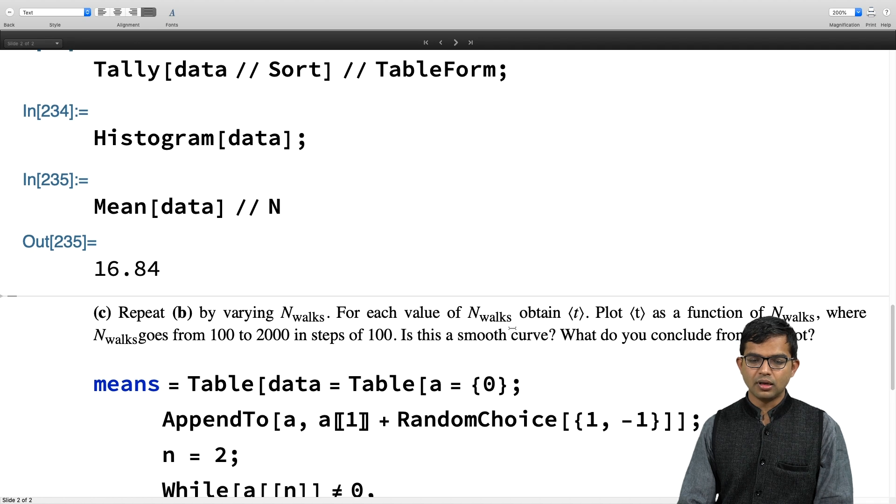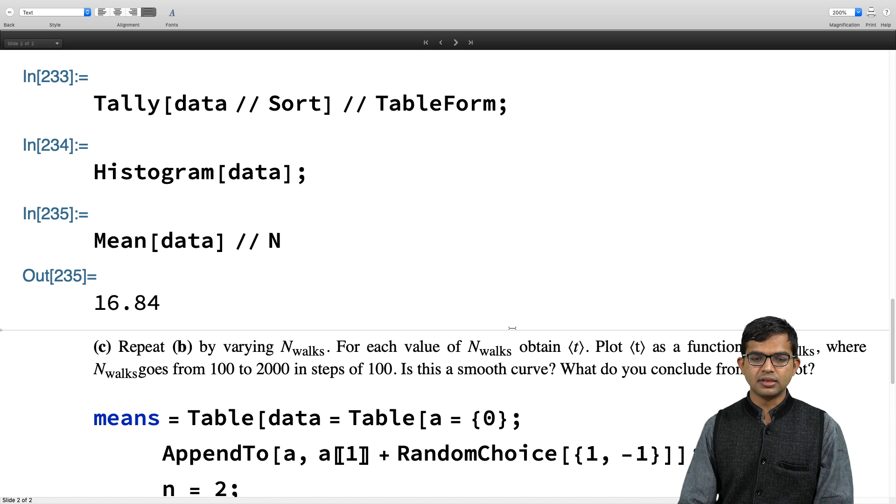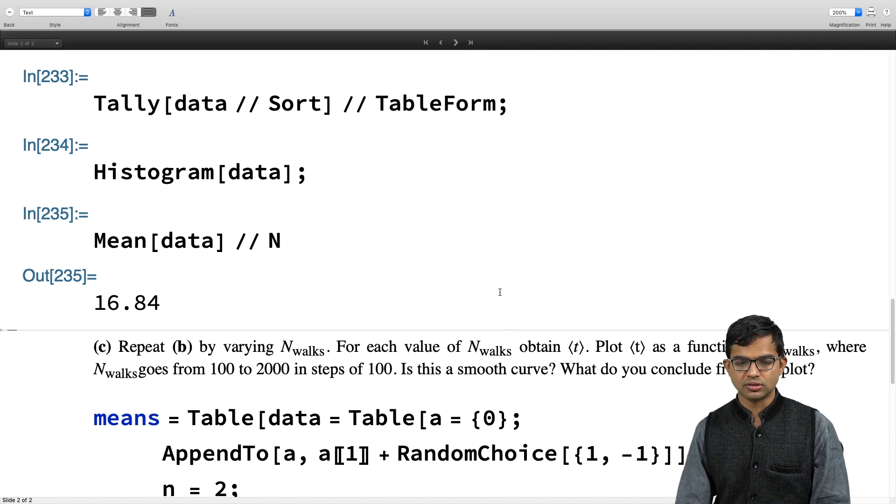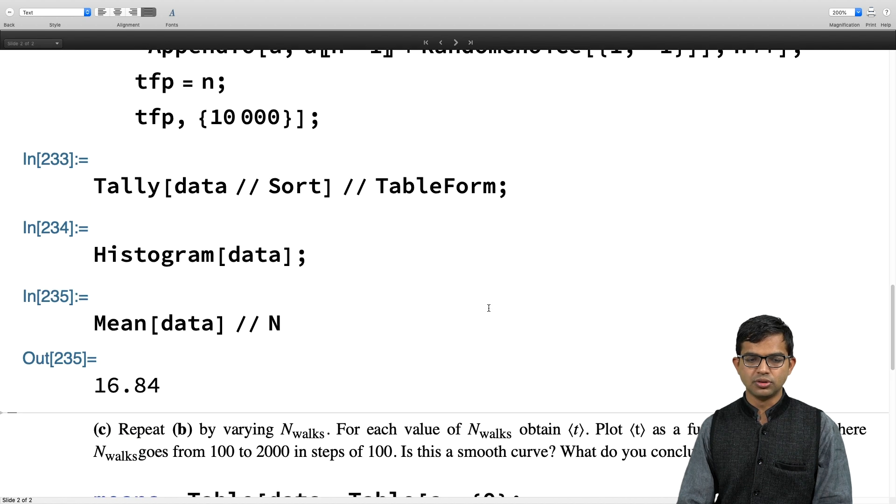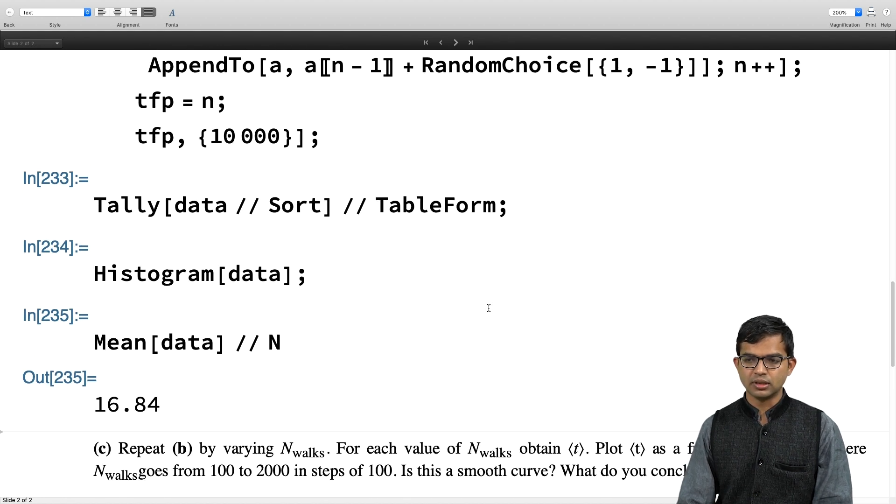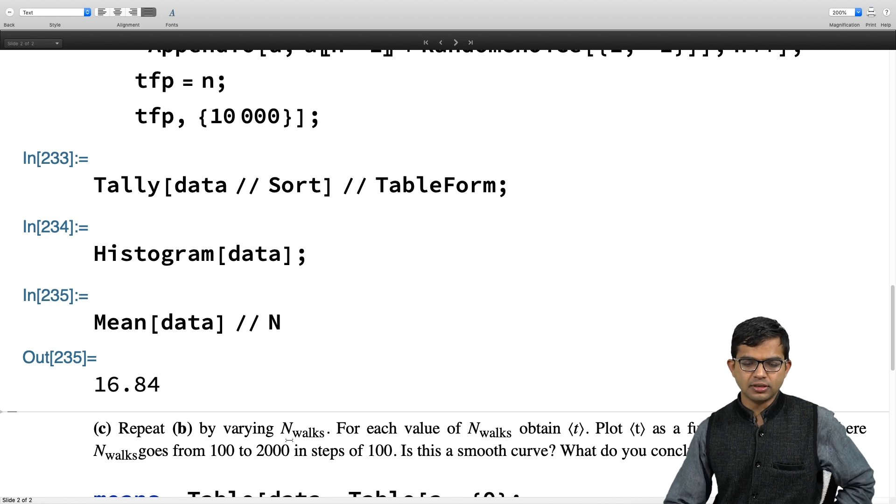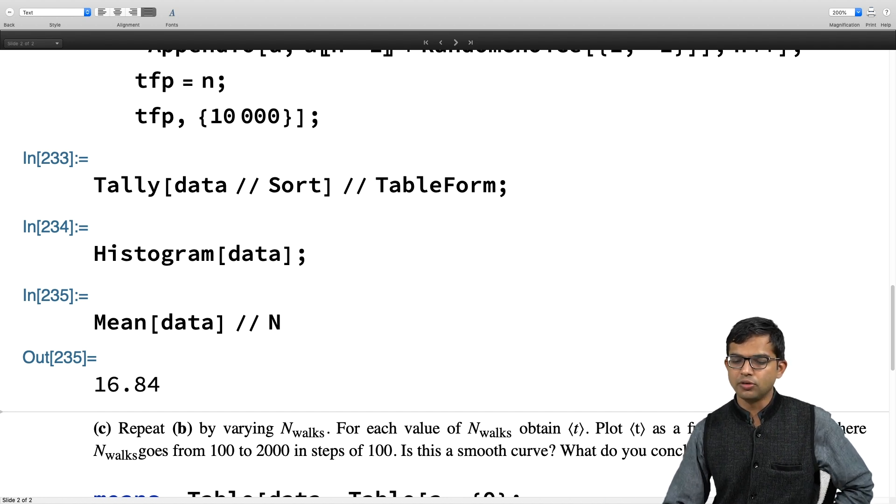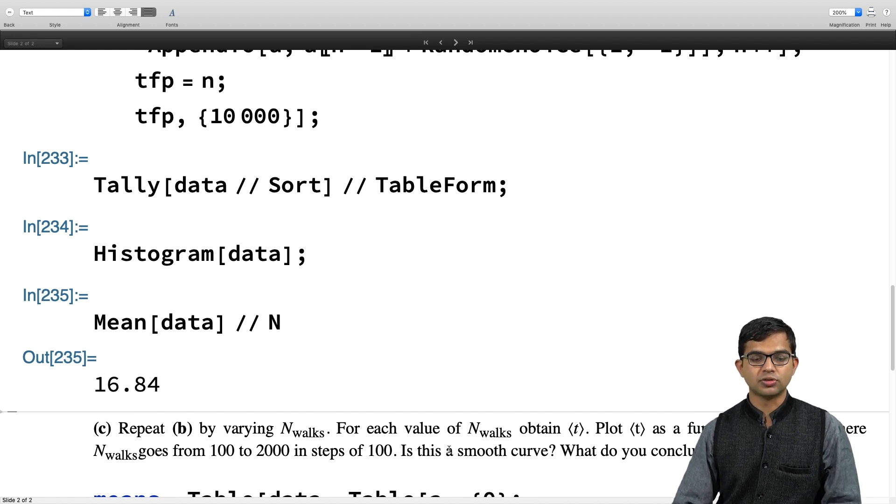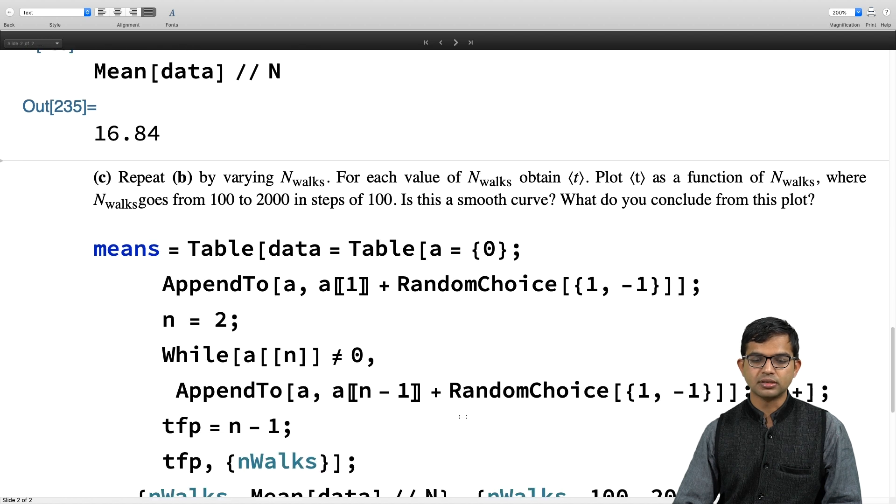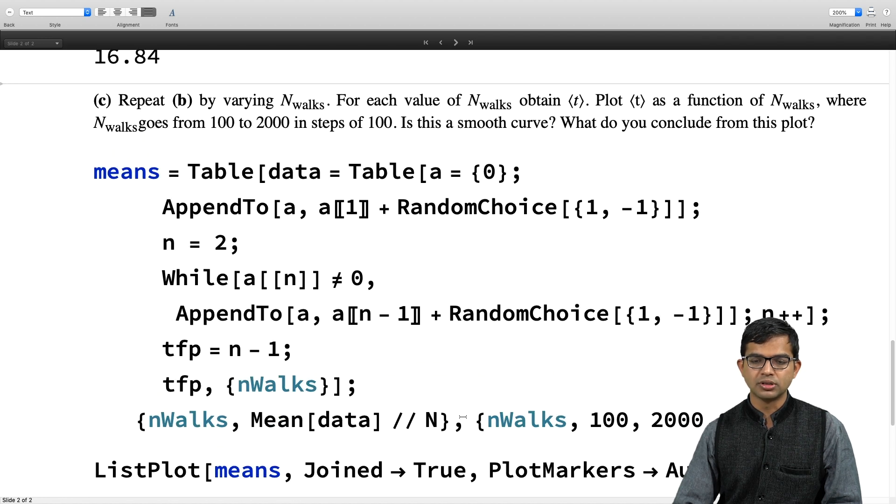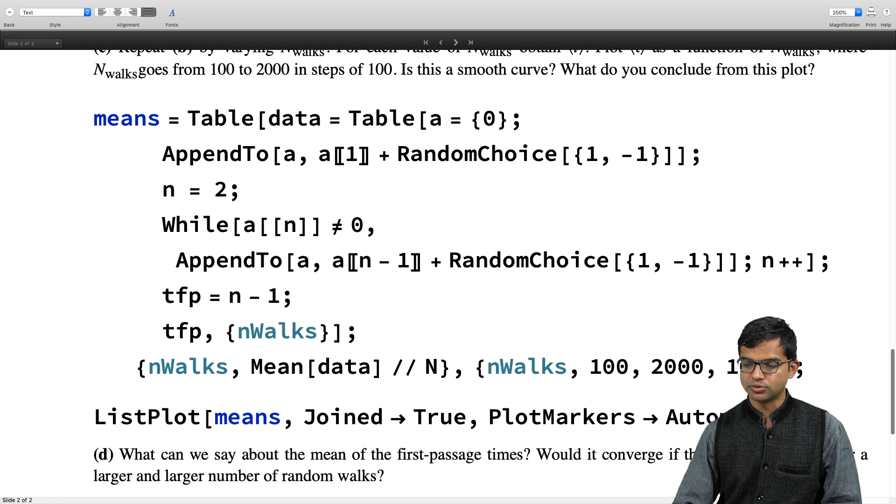Part C, what does it do? It says you repeat part B by just varying the number of walks, n walks itself. And then you ask whether there is some convergence of this average value. So this is some code that you can look at. Here I have TFP equal to n minus 1 and then I have a list plot. So this problem is going to take some time for it to run. First I have to run this, so I hit shift enter and it takes a moment.